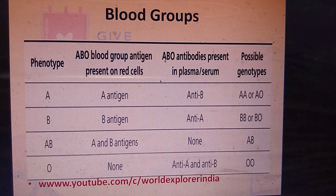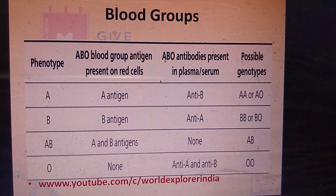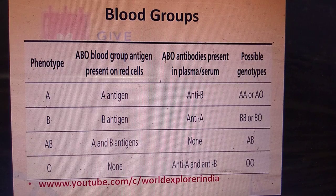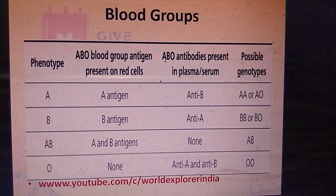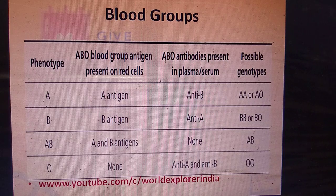Blood groups have both phenotype and genotype. Phenotype is the physical expression: A, B, AB, and O. Genotype refers to the genes received from both parents — the maternal and paternal alleles. For blood group A, the alleles are AA or AO; for B, it is BB or BO; for AB, it is AB; and for O, it is OO. Both antigens are present in the AB blood group, while no antigen is present in O. Correspondingly, antibodies are absent in AB, while both antibodies are present in O.